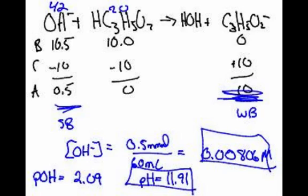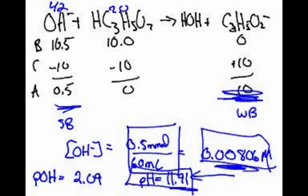So that's the answer. You ignore the weak base — it's unimportant. You just do the excess strong base calculation: take the concentration, take the negative log, and you're basically done.